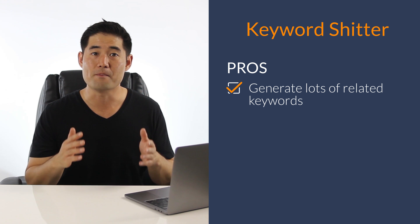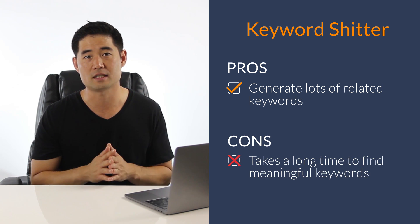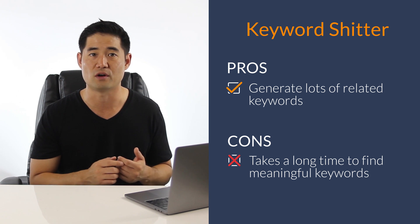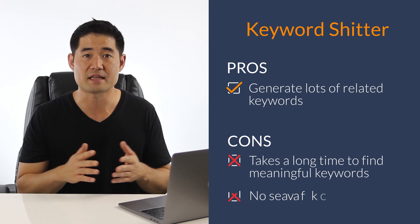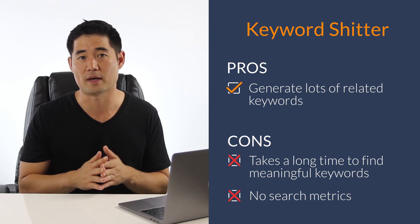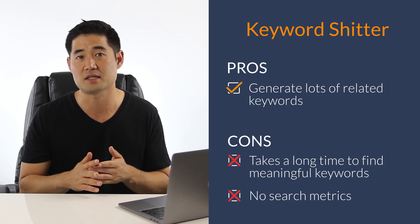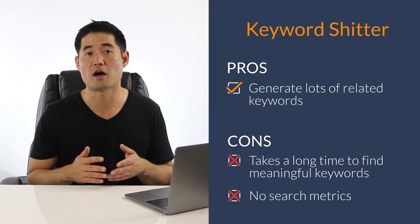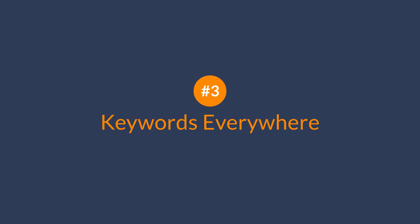There are a couple major cons to this tool. First, it can take quite a long time to find keywords that are actually meaningful. And the very obvious con is that there are no search metrics, which can take a while to batch process in another tool. But this can be solved with the next keyword research tool, and that's Keywords Everywhere.